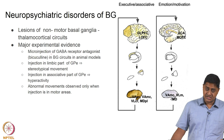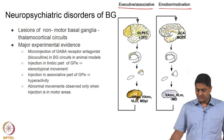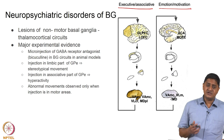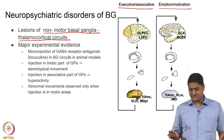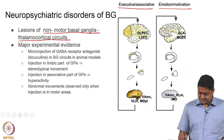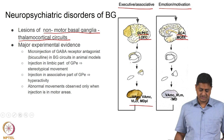If there is a lesion in the executive or associative area, or a lesion in the limbic loop, this leads to behavioral disorders. These are caused due to lesions of non-motor Basal Ganglia thalamocortical circuits. The lesion can be anywhere in this loop — in the thalamocortical loop, in the striatum, or in the GPe.